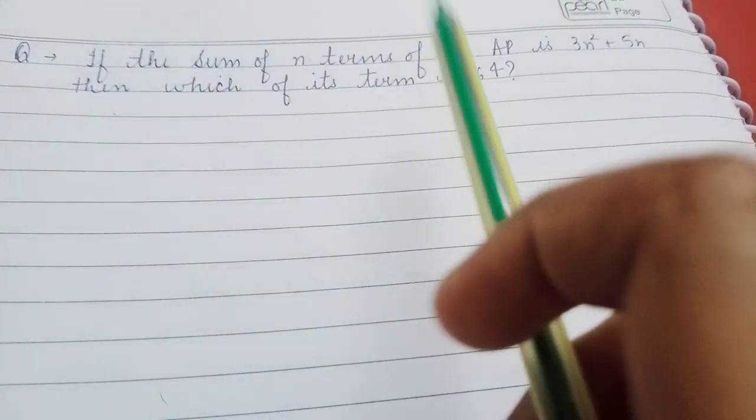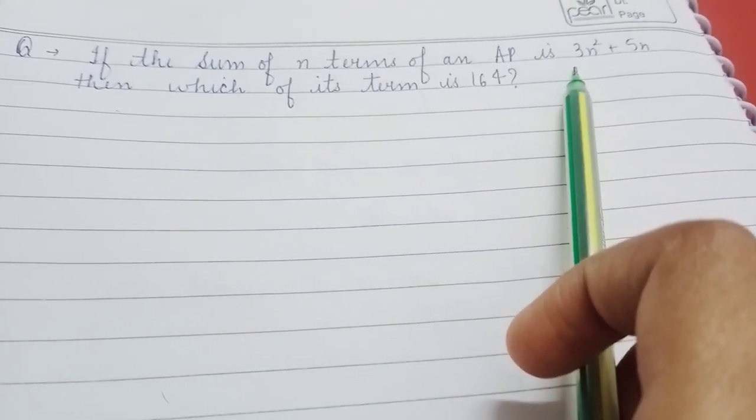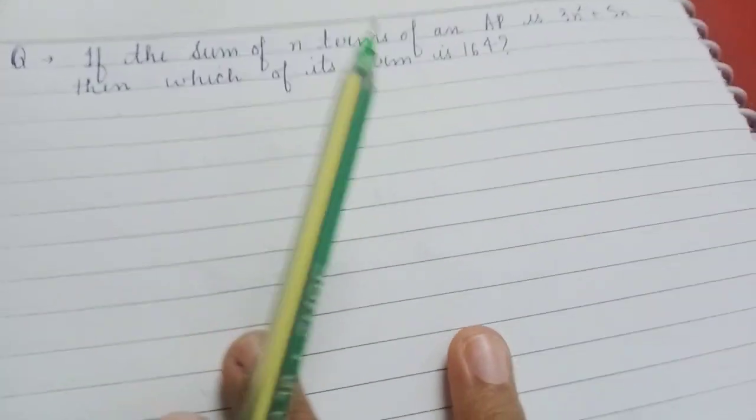If the sum of n terms of an AP is 3n squared plus 5n, then which of its term is 164?